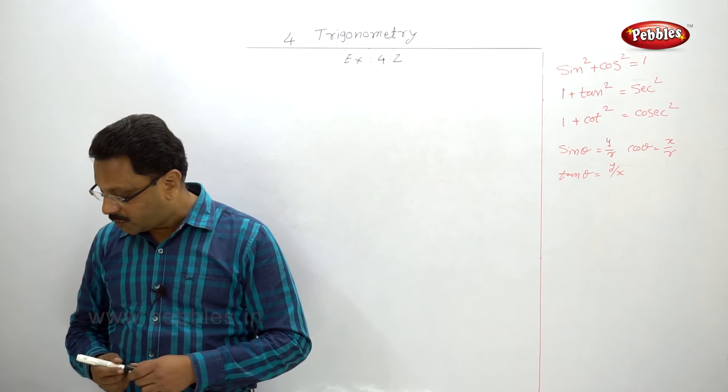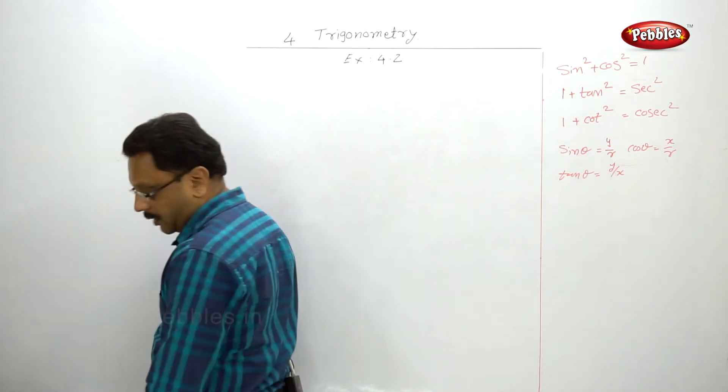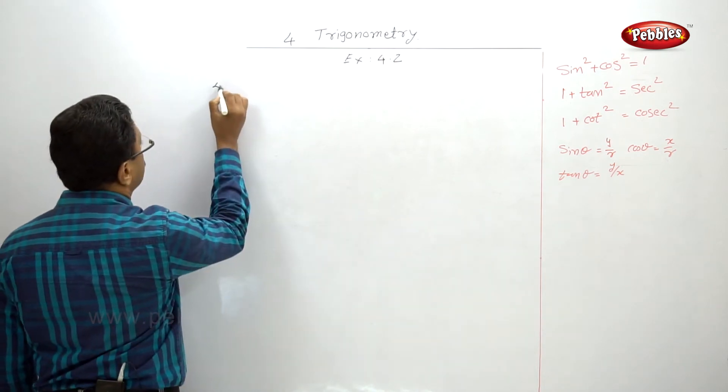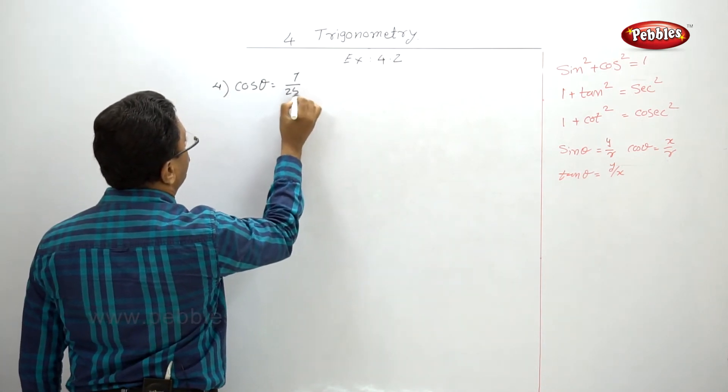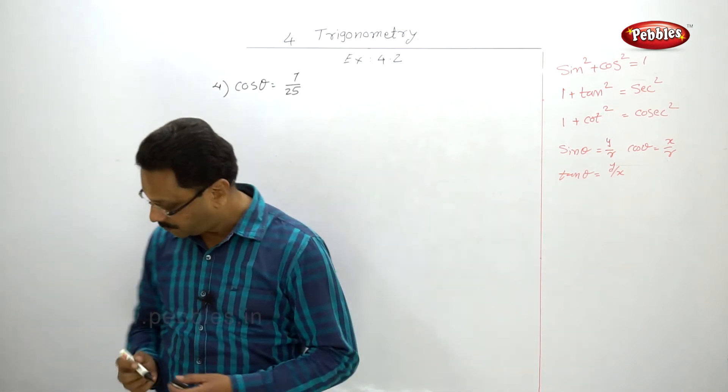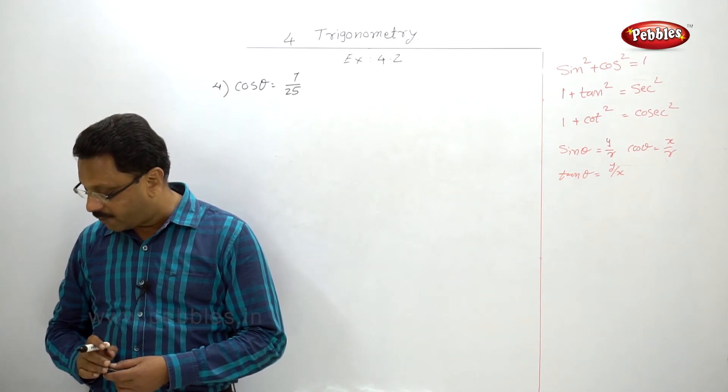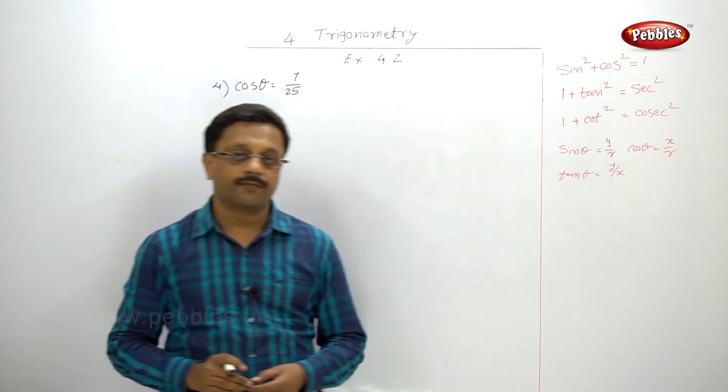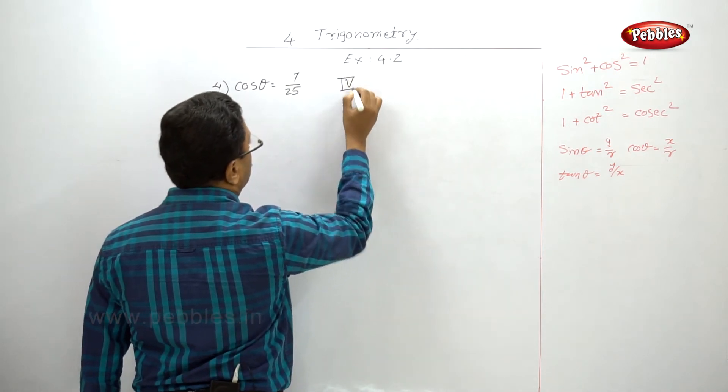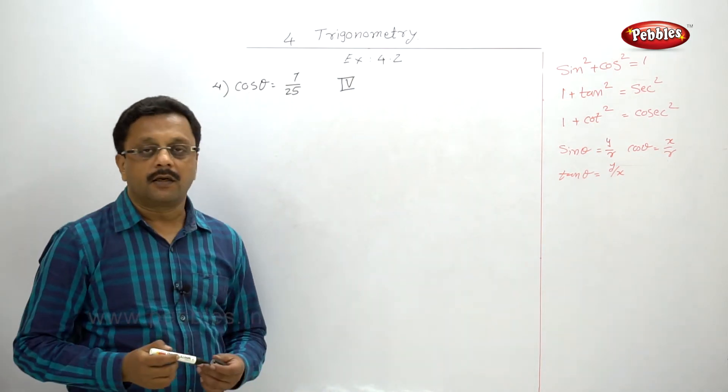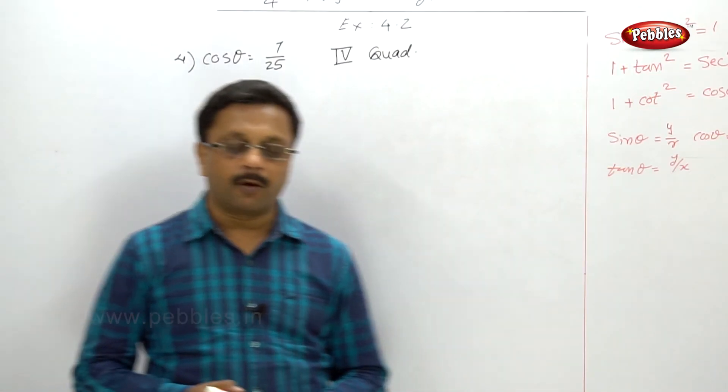Next is example number four. If cos θ = 7/25 and θ is in fourth quadrant, find other five trigonometric ratios. It is in fourth quadrant.